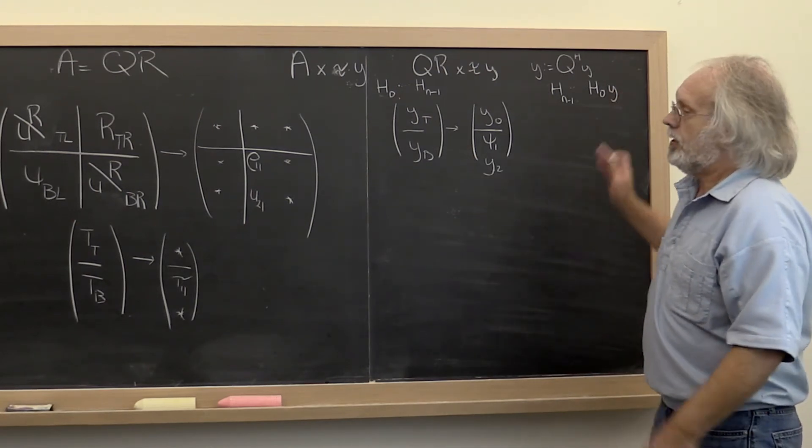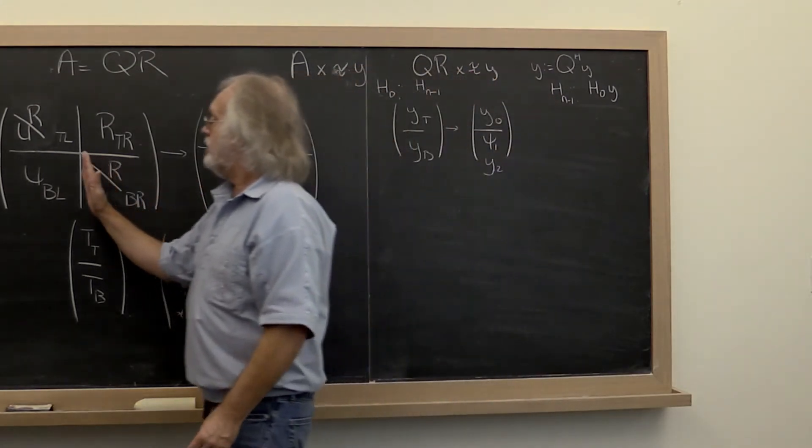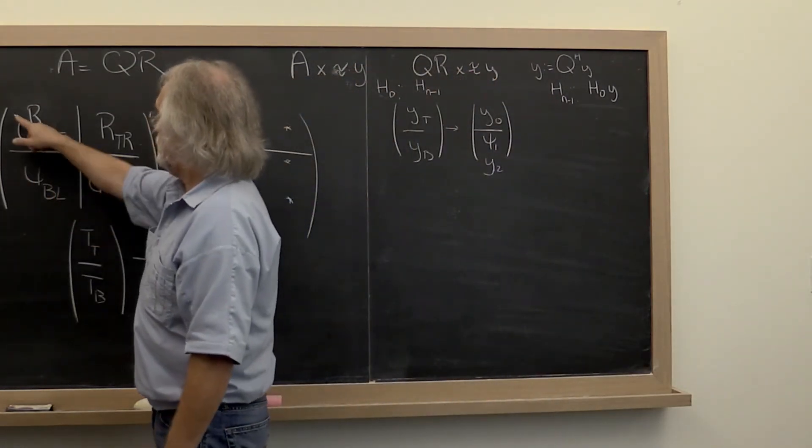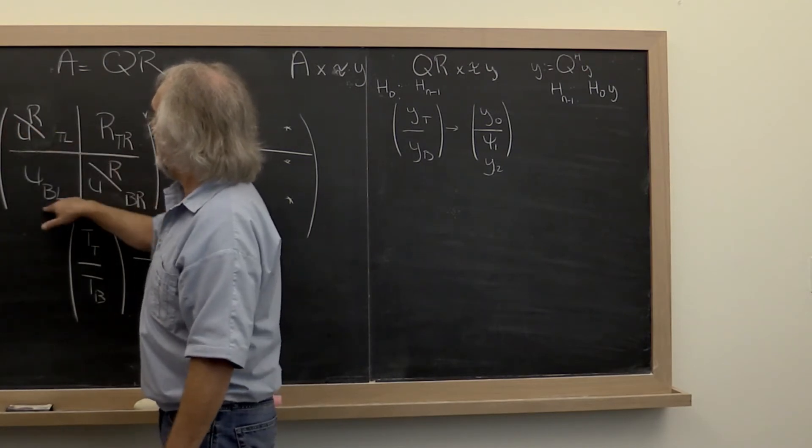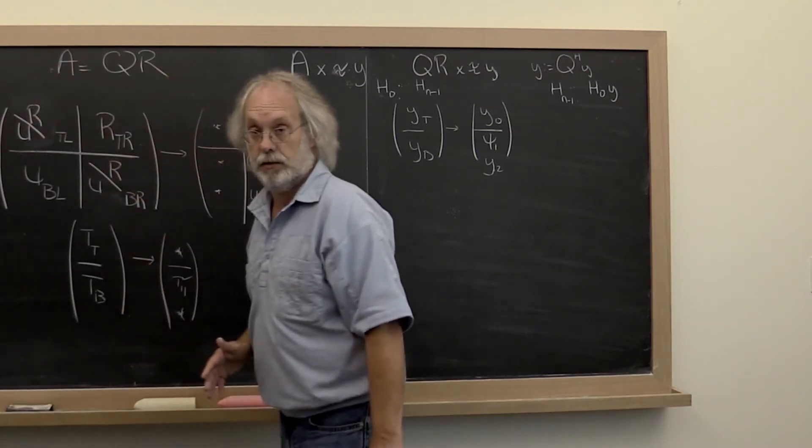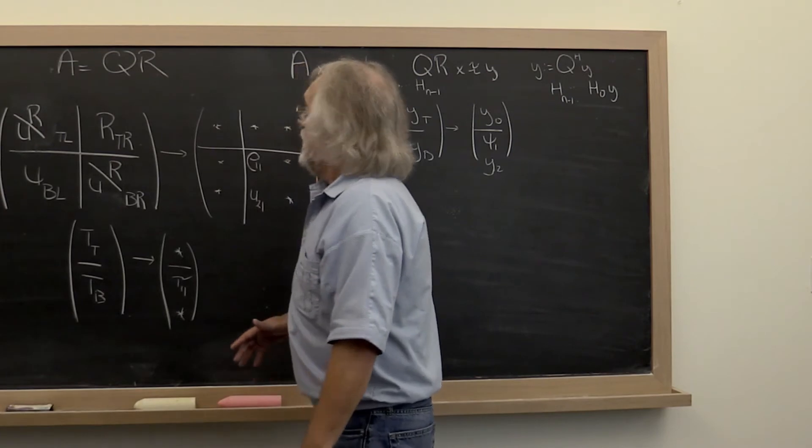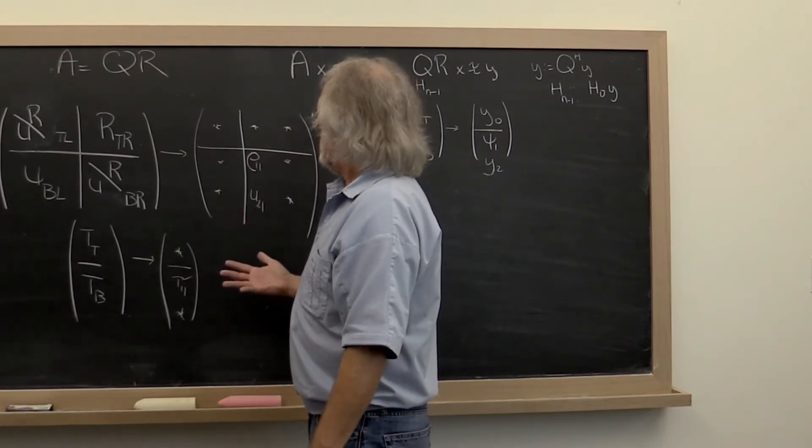Imagine that you have already applied all of the Householder transformations associated with the Householder transforms that were stored below the diagonal here in matrix A. And then what happens in the current step?